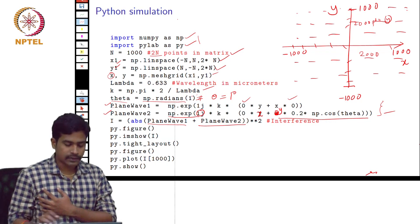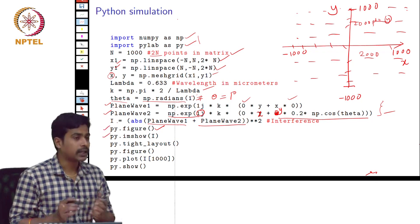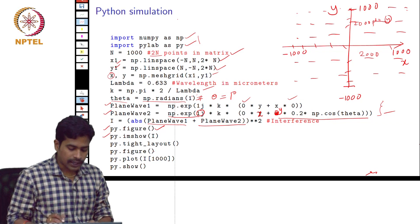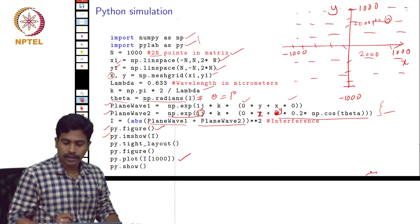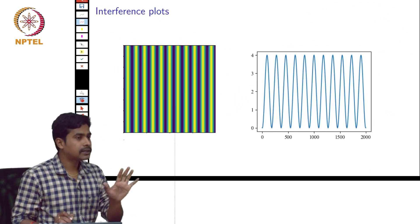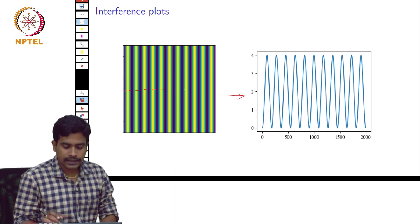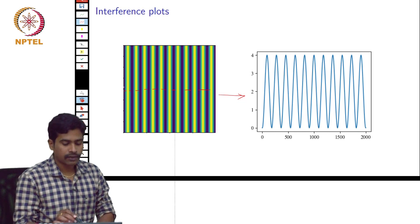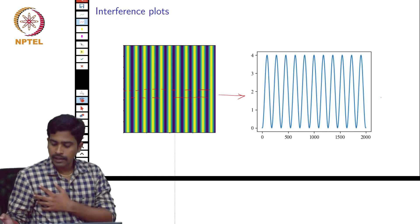After we have the interference values, I am showing the interference pattern using this command. I am also using another command to plot the intensity along a particular line in the interference pattern. After running this code, the output is the interference pattern image, which has a sinusoidal variation. I plotted the intensity along one row taken from this figure, and we can see the sinusoidal variation.